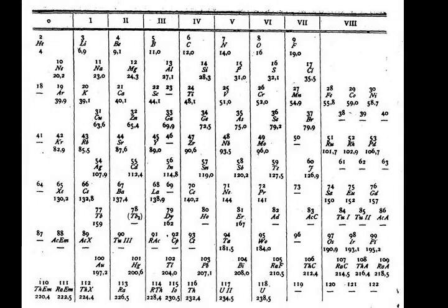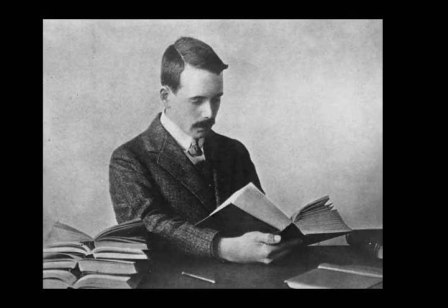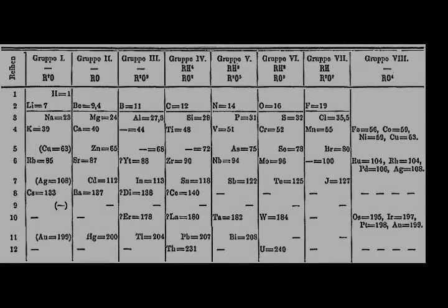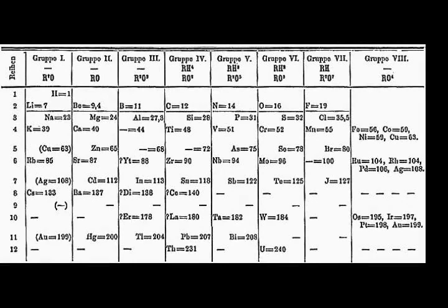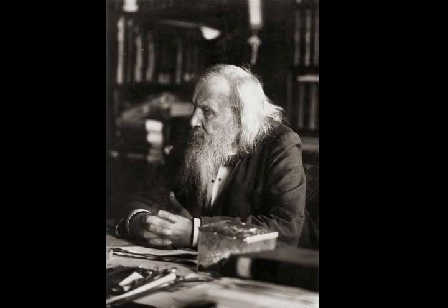This creates an analogous series in which the outer shell structures of sodium through argon are exactly analogous to those of lithium through neon, and is the basis for chemical periodicity that the periodic table illustrates. At regular but changing intervals of atomic numbers, the properties of the chemical elements approximately repeat. Elements in the same column have the same number of outer electrons and analogous outer electron configurations; these columns are called groups. A row begins when a new shell begins filling; these rows are called the periods.